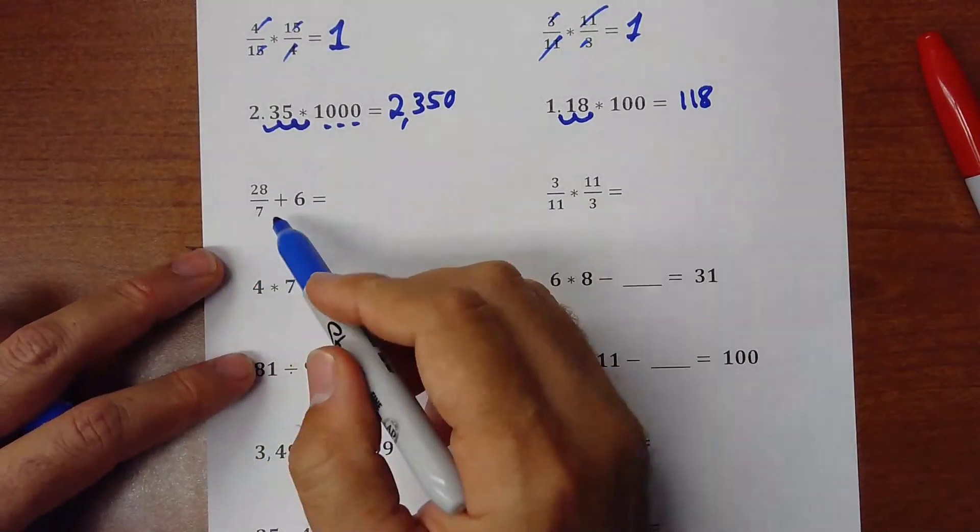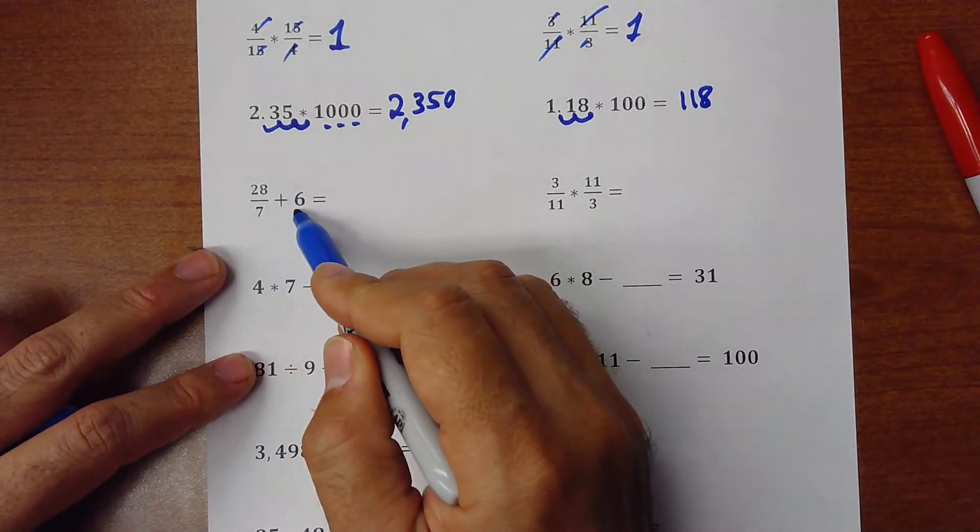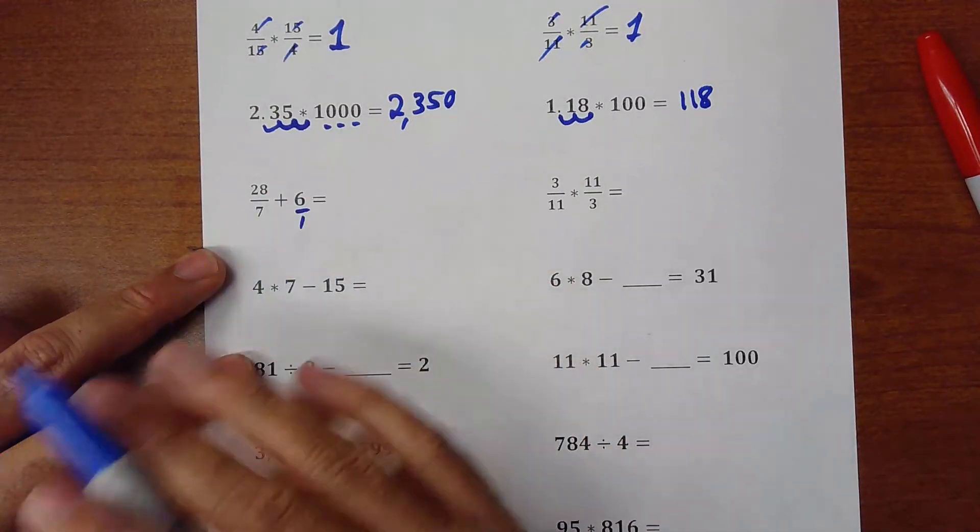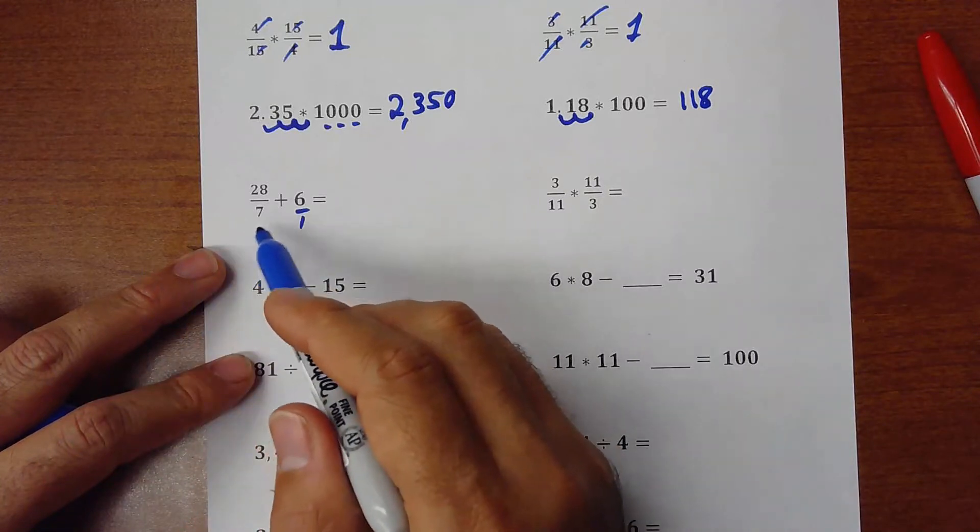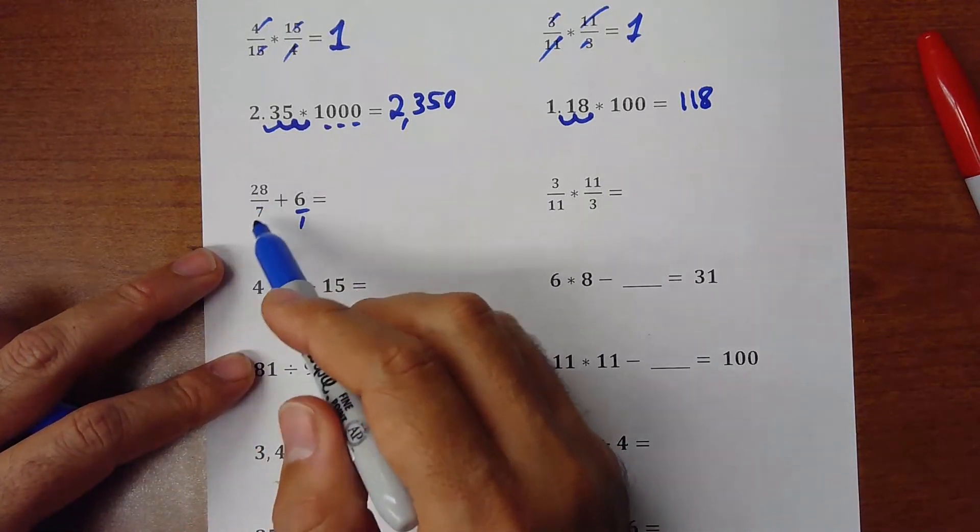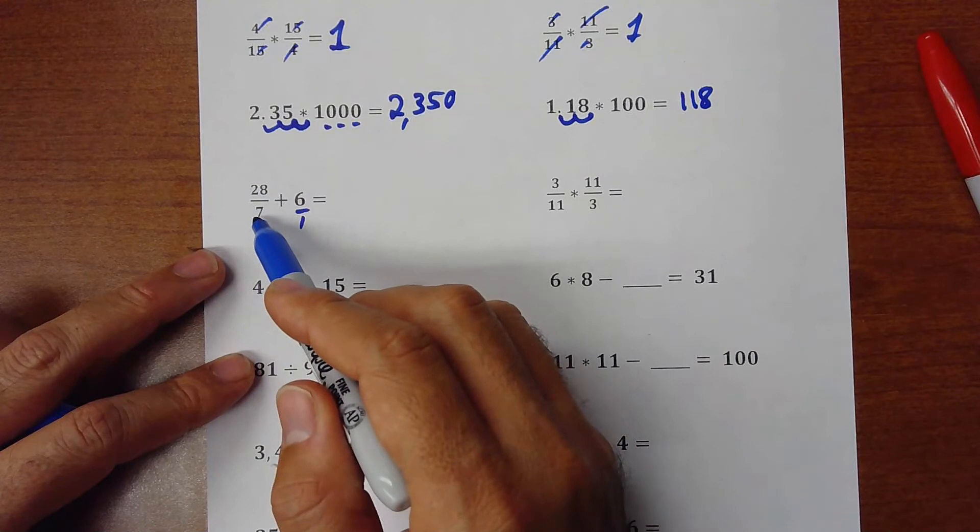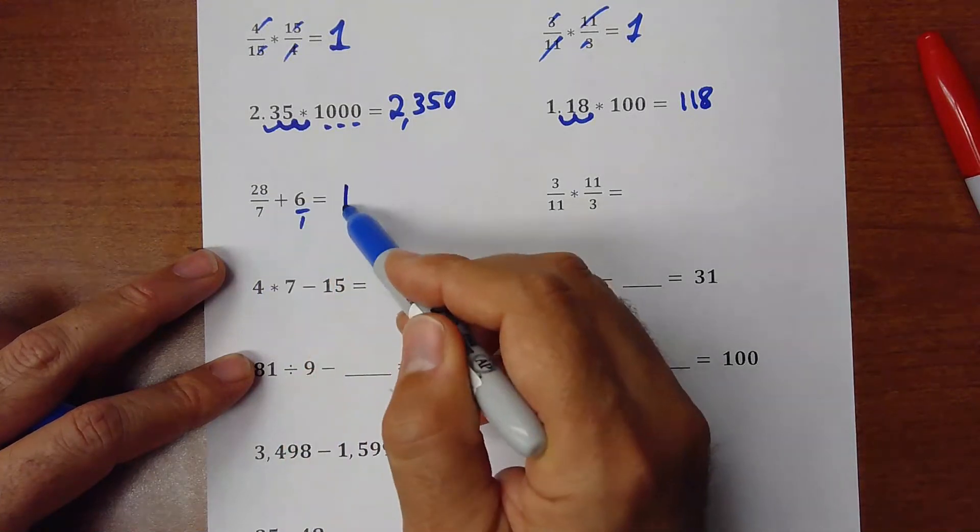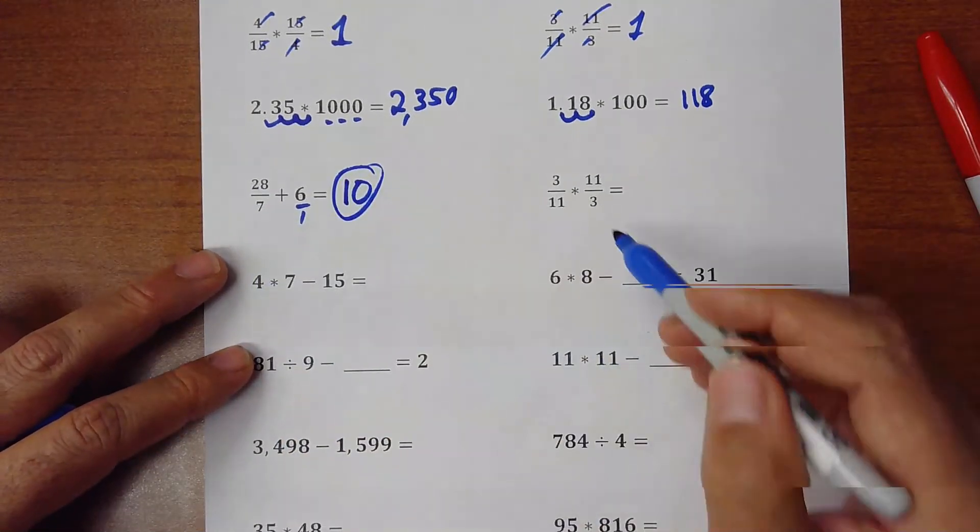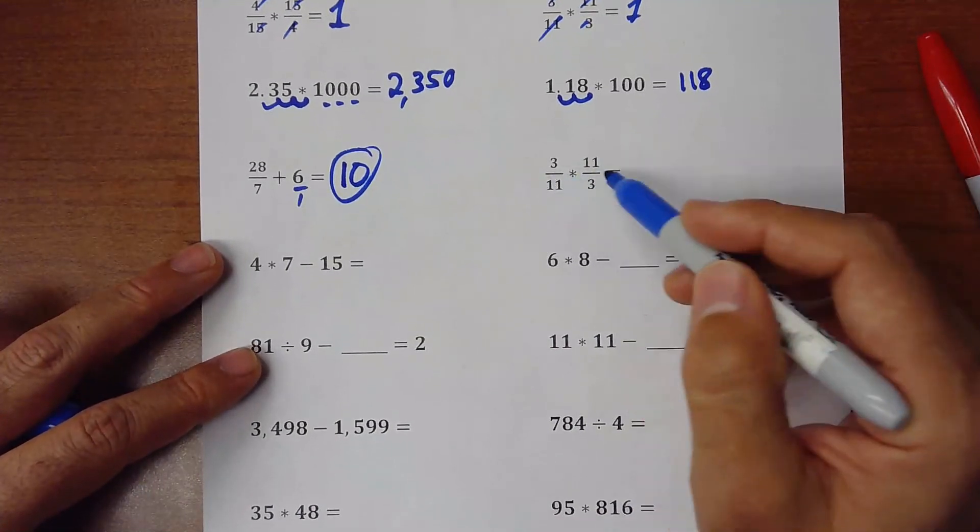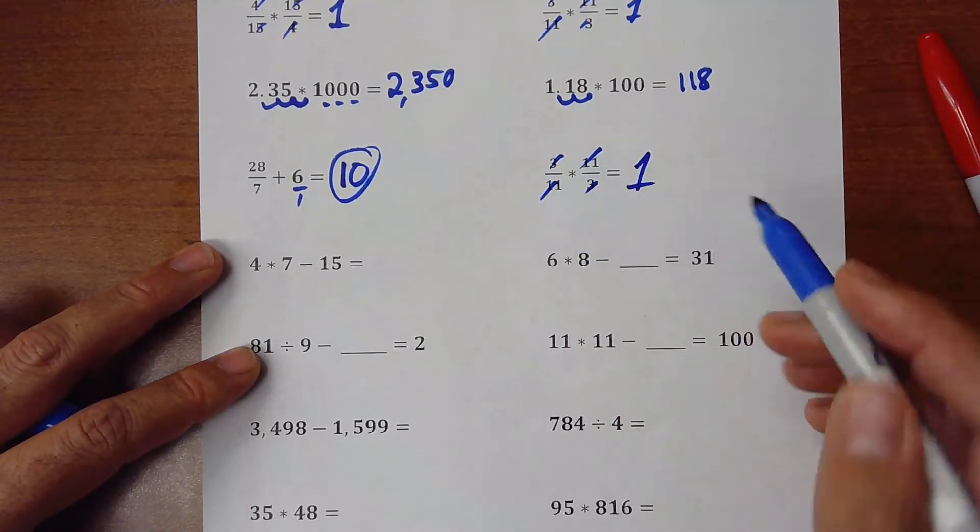So here, some student might try to do it as a fraction. Because visually, that's what you try to do first. But if you look closely to the exercise, 28 divided by 7 is 4. 4 plus 6 is 10. The answer will be 10. Here, inverse multiplicative. The same thing. This with this, this with this. The answer is 1.